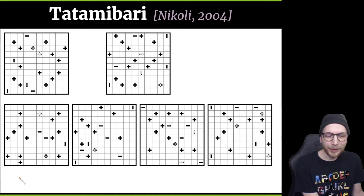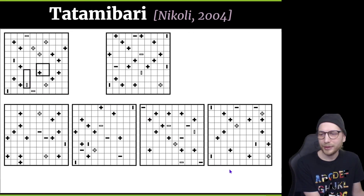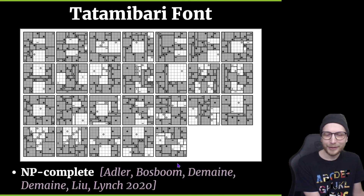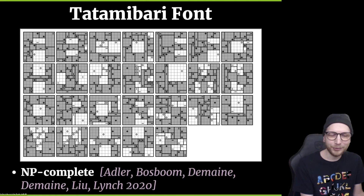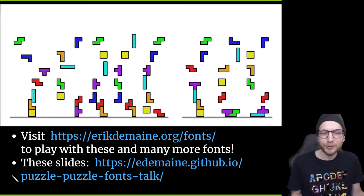The last puzzle is Tatami Bari. This is a Nicoli-style puzzle where you want to decompose a grid into little regions: the plus clues are in square regions, the vertical bar clues are in rectangles that are taller than they are wide, and vice versa with the horizontal clues. The puzzle is NP-hard, and we have an NP-completeness result for this one as well, plus a full alphabet, which we checked by exhaustive search with a computer.